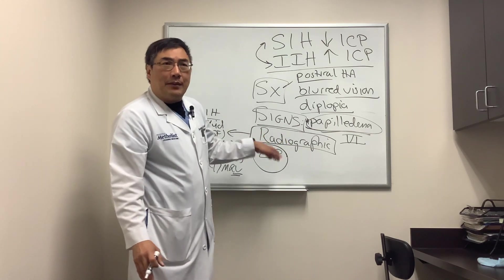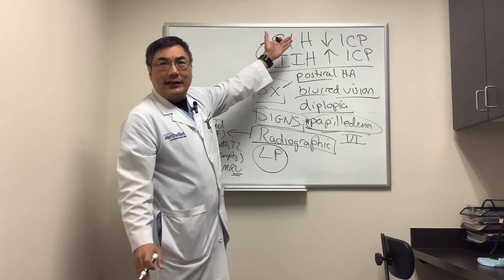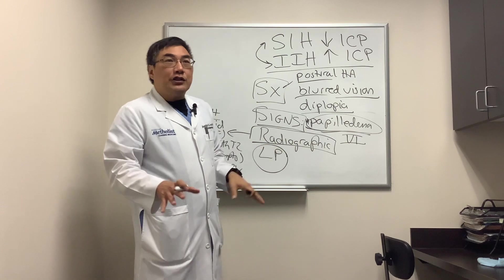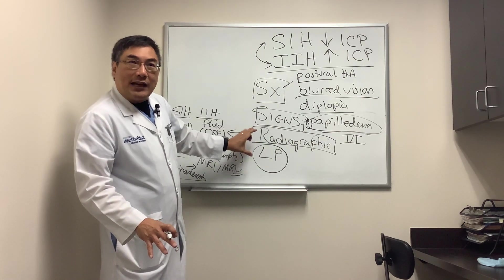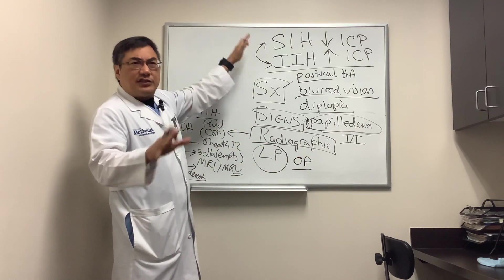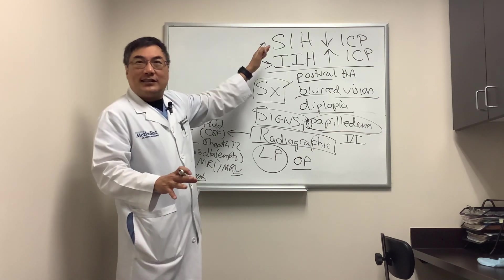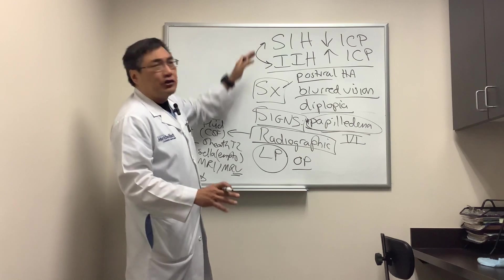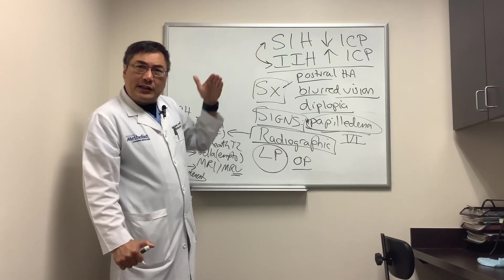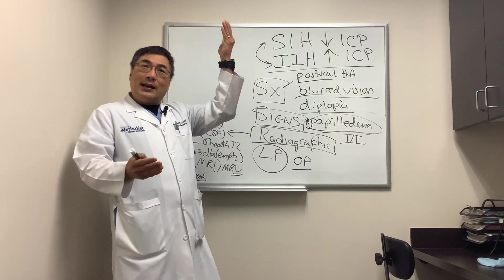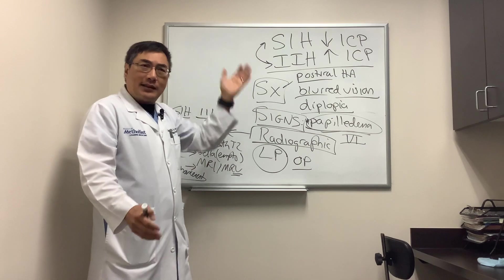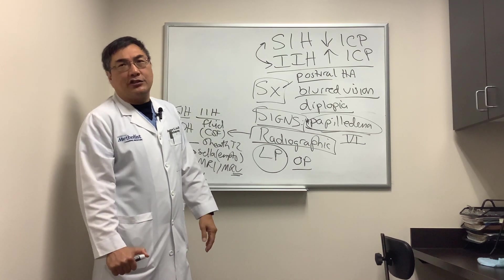The only way to measure the pressure is with a lumbar puncture. If it's low, you have the diagnosis of SIH; if it's high, you have the diagnosis of IIH. But sometimes people have both, so it can be in between or even normal. You have to combine the symptom, the sign, the radiographic sign, and the confirmatory diagnostic test. If pressure is low, you need to look for a CSF leak. If it's high pressure, that can cause the CSF leak and lead to intracranial hypotension — so the two disorders are related. You need to be able to compare and contrast these two pressure conditions: IIH for high pressure and spontaneous intracranial hypotension for low pressure.